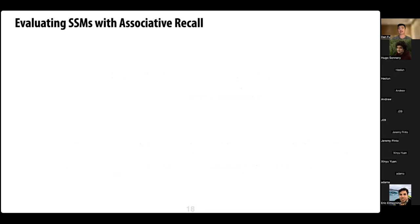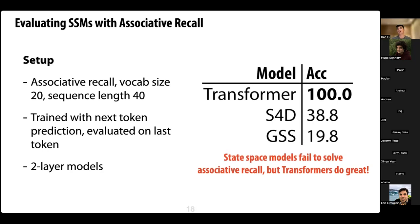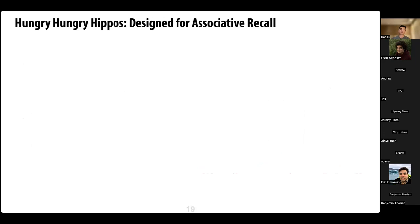We set up a simple toy example that can be solved in two layers and run in five minutes, using next-token prediction and evaluating performance on the last token with small two-layer models. We found that attention can solve this with 100% accuracy in two layers, but state space models fail completely — performance is close to random guessing. So we have a synthetic task that clearly shows the gap between SSMs and attention.